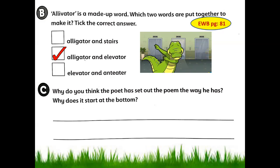Question C is homework. It says: why do you think the poet has set out the poem the way he has? Why does it start at the bottom? An interesting question — I'm sure you're going to enjoy doing this.